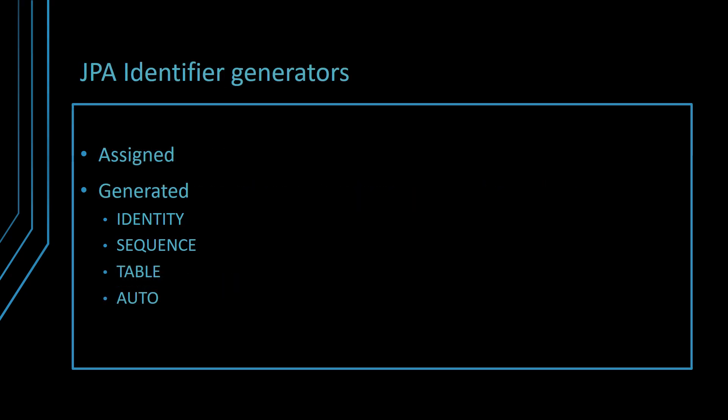In JPA and Hibernate, every entity must have an identifier. Most often, the underlying table primary key column is mapped to the entity identifier. The identifier can be manually assigned, or it can be automatically generated by the JPA provider. There are three basic strategies to generate identifiers automatically: Identity, using a database identity column; Sequence, using a database sequence generator; Table, emulating a database sequence using a separate table. When using Auto, Hibernate chooses one of the three aforementioned identifier generator strategies.